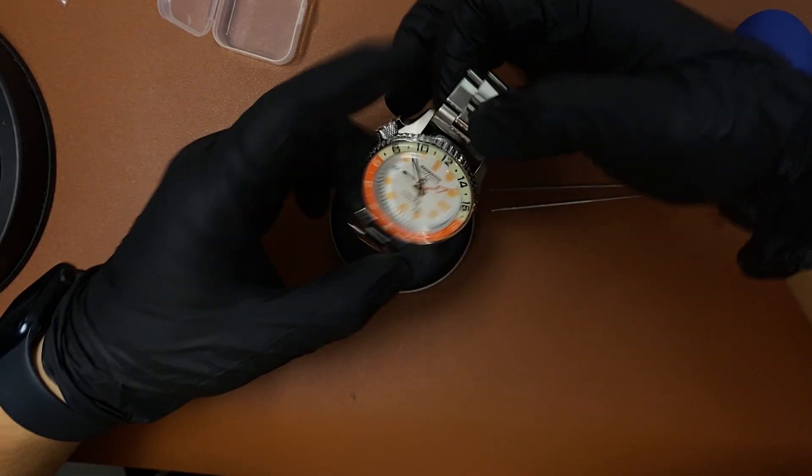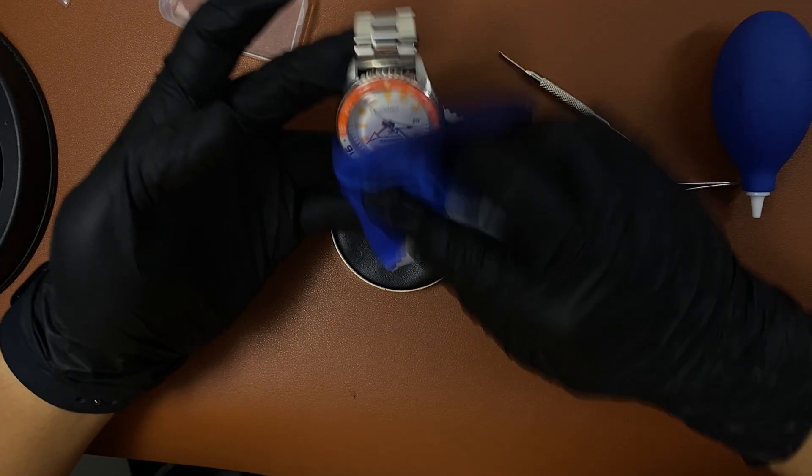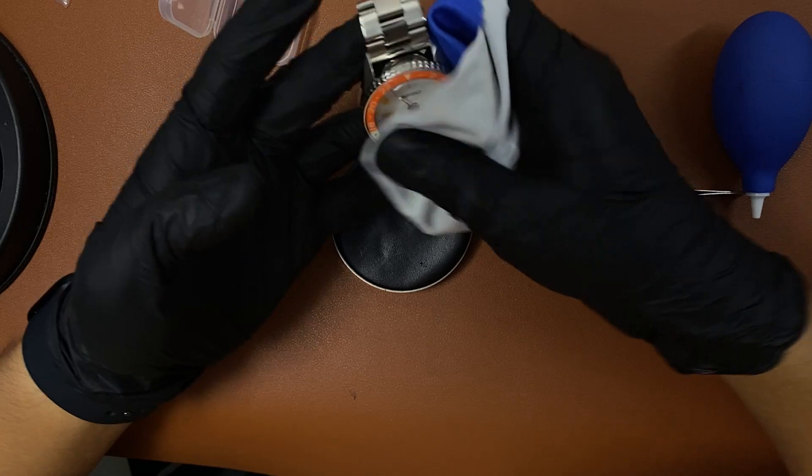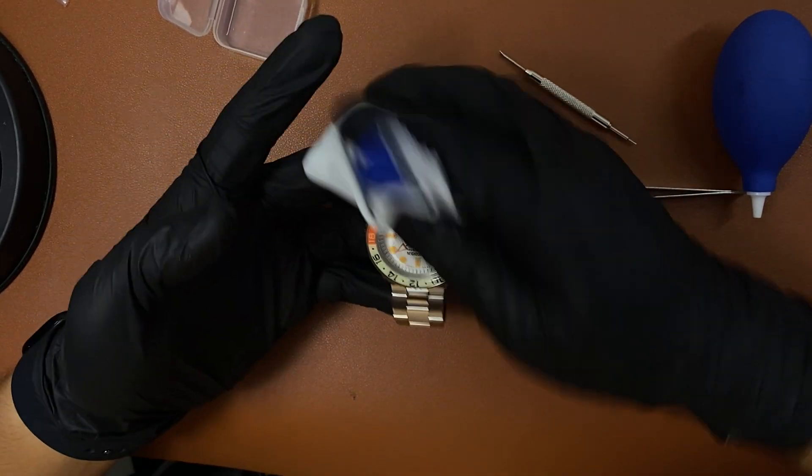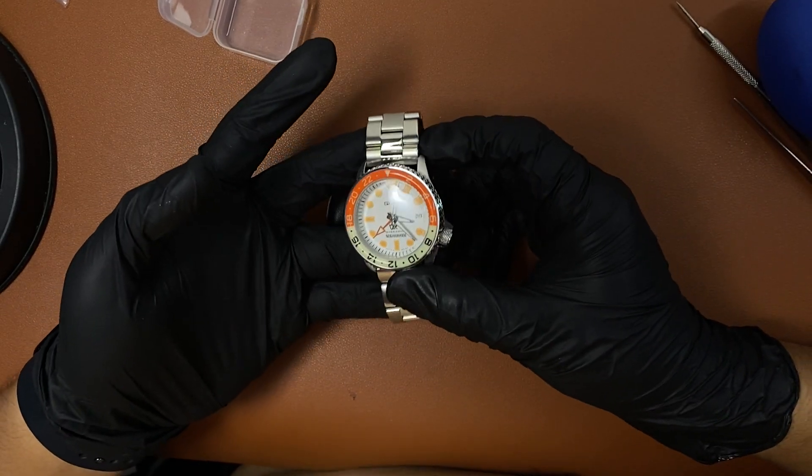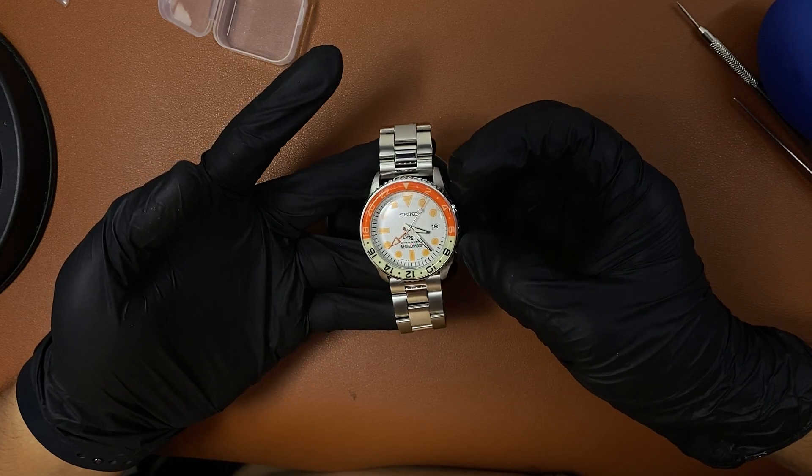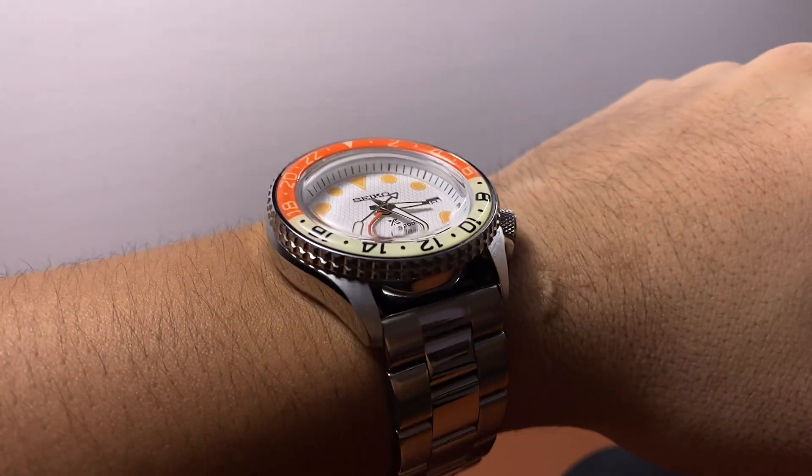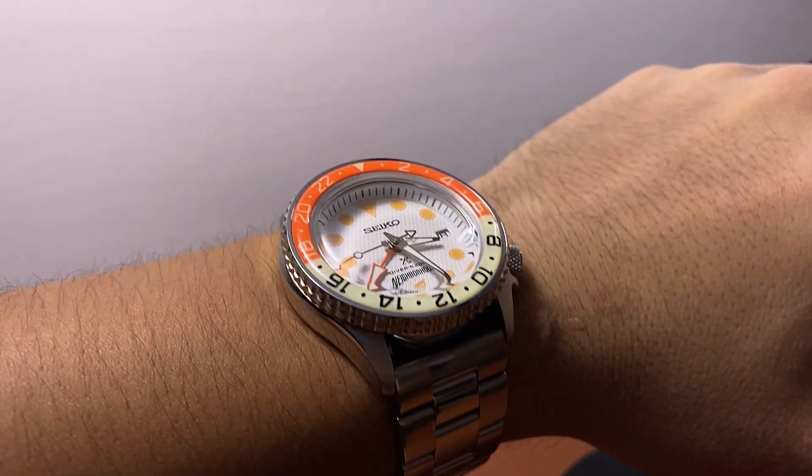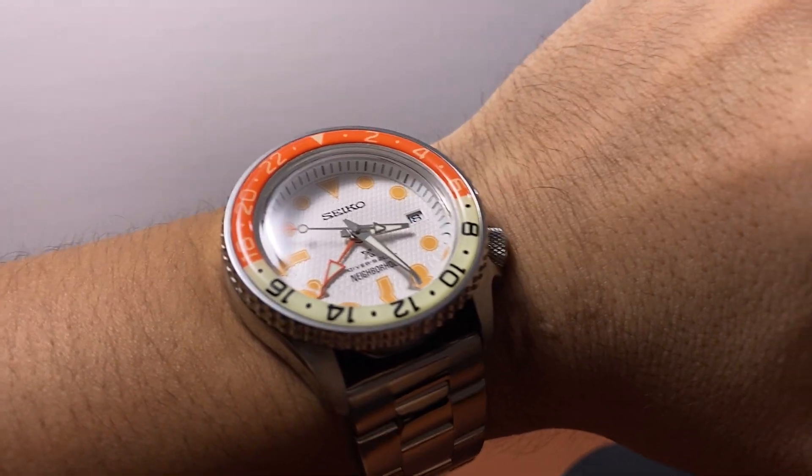And the watch fix is now completed. That's all for this NH34 quick date wheel change fix video. I hope this helps you all. Feel free to refer to a lot of resources down in the video description below. Feel free to ask questions in the comment section. I'm happy to help and reply as many as possible. I hope this video helps and saves your NH34 movement. Happy modding, cheers, see you in the next one.